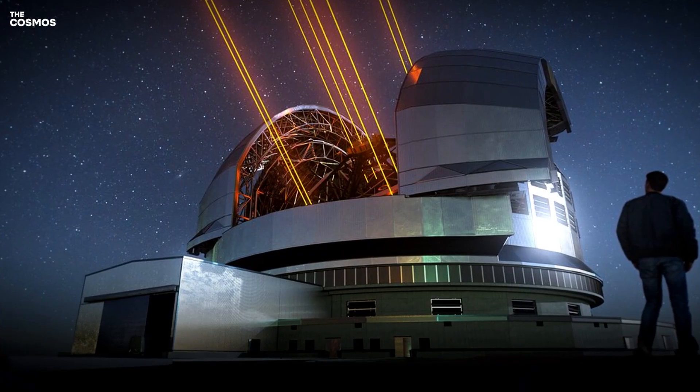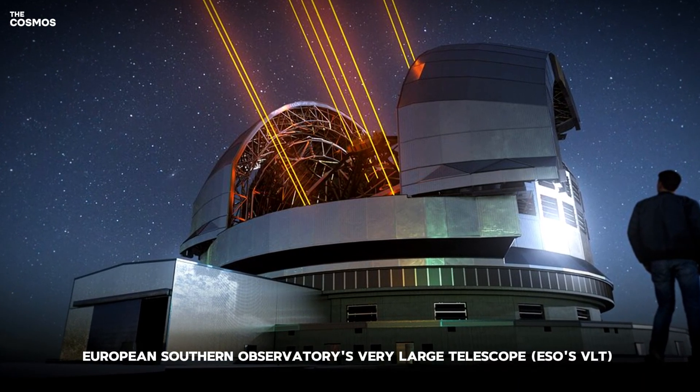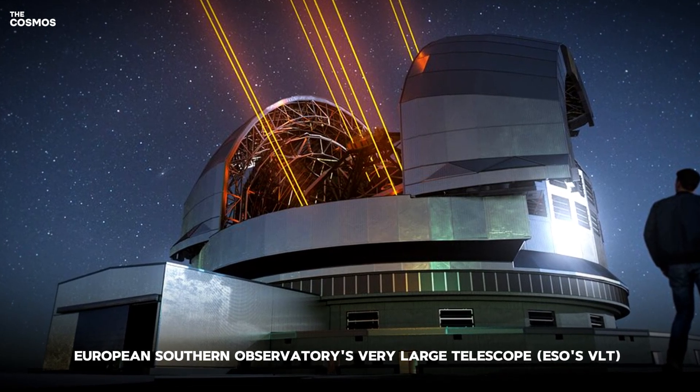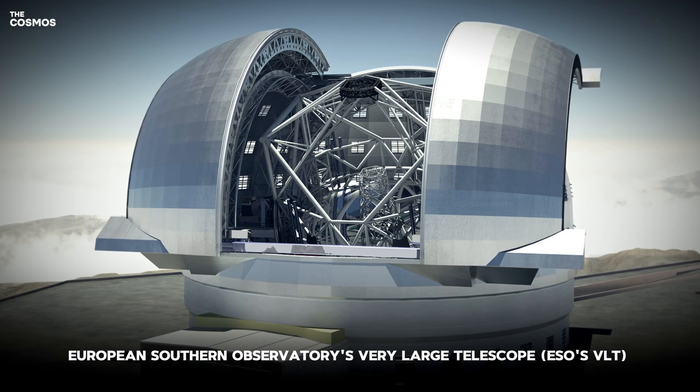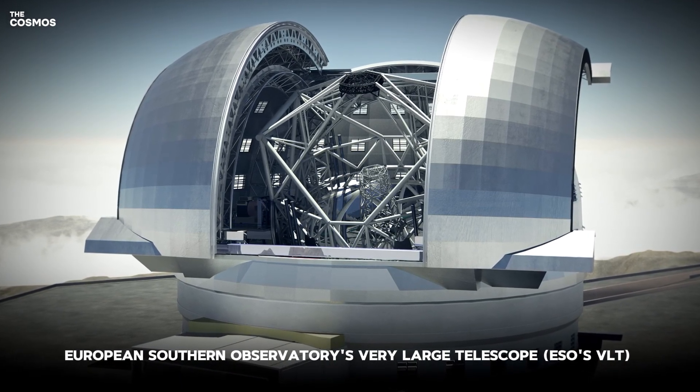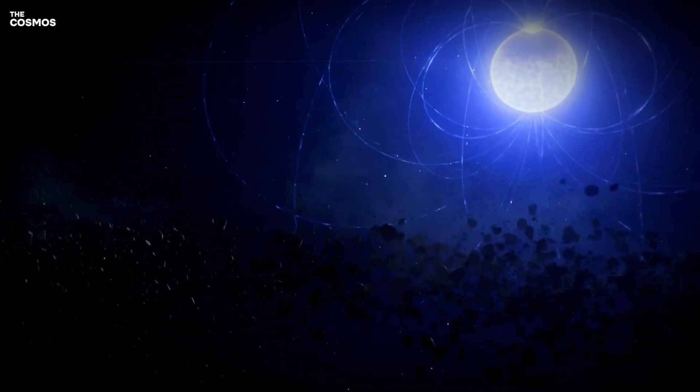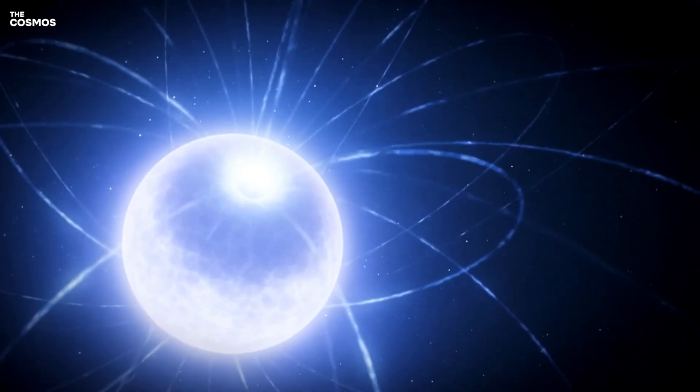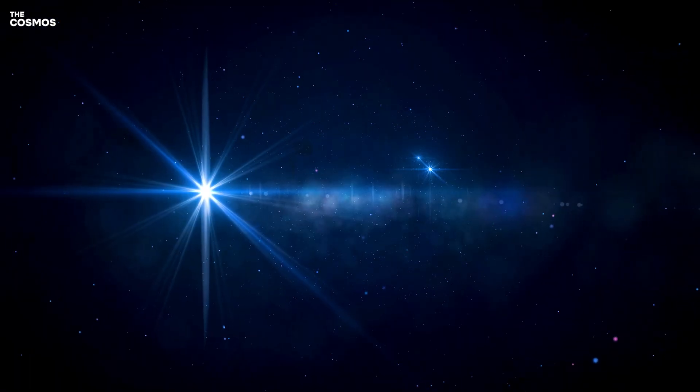Researchers utilizing the European Southern Observatory's Very Large Telescope, ESO's VLT, in Chile, have uncovered a physical remnant of such an event: a metallic scar etched upon the surface of a white dwarf star.